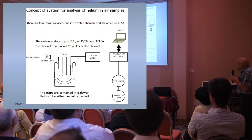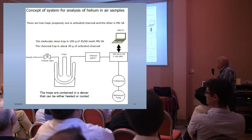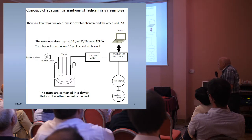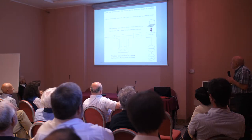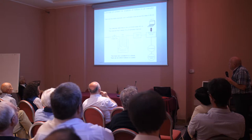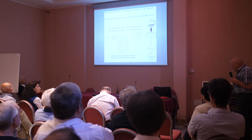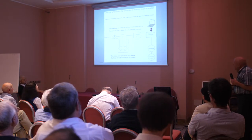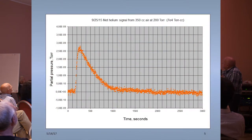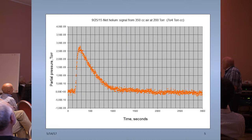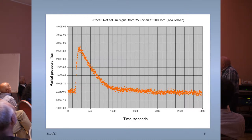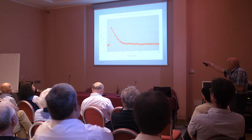This was the concept we had of how to build this thing — pretty simple to start with. The idea was that we would inject a sample, percolate it through a couple of traps, have it cleaned up, and then just measure the helium in the Stanford Research quadrupole RGA. We tried this experiment and this is what we got. This was the net helium signal from 350 cc's of air at 200 torr — a pretty big sample of air — and we actually saw a reasonably nice signal. This curve shows the partial pressure of mass 4 as a function of time after we inject the sample.